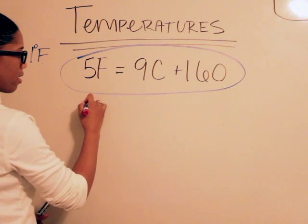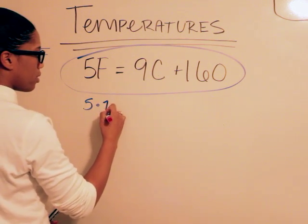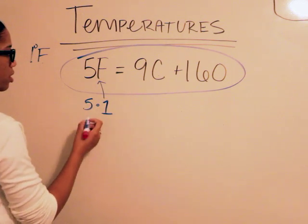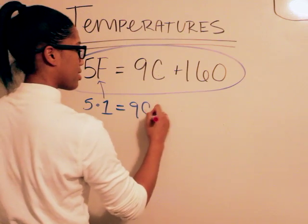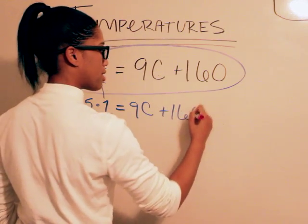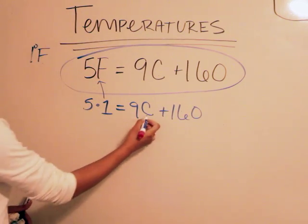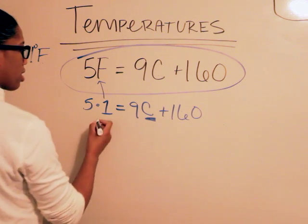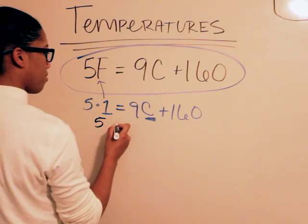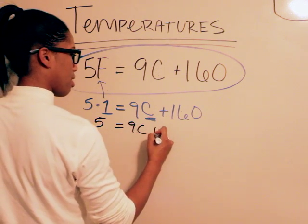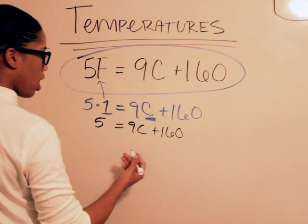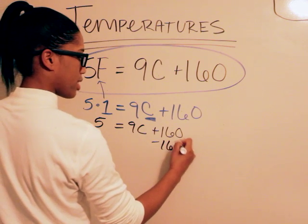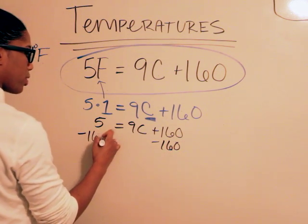If they say it's one degree Fahrenheit, you would say five times one, you would just replace the one where the F goes, equals 9C plus 160, and basically you would just solve for C. So this is what it will look like after you're done. It will be 5 equals 9C plus 160, then you can say minus 160 on this side, so you have to do it on this side as well.